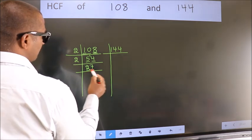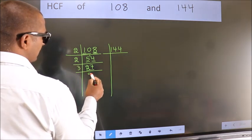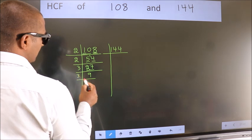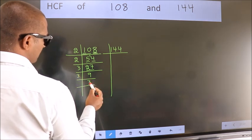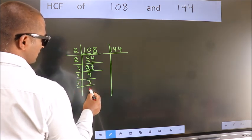Now 27 is 3 times 9 is 27. 9 is 3 times 3 is 9. 3 is a prime number, so 3 times 1 is 3. The other number.